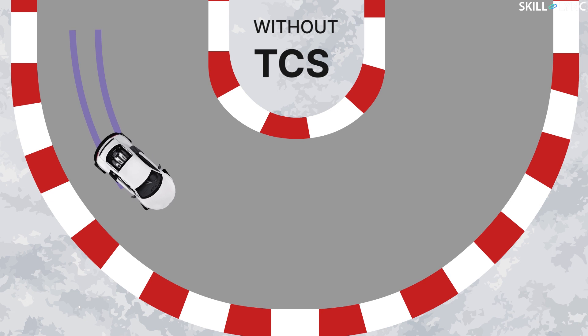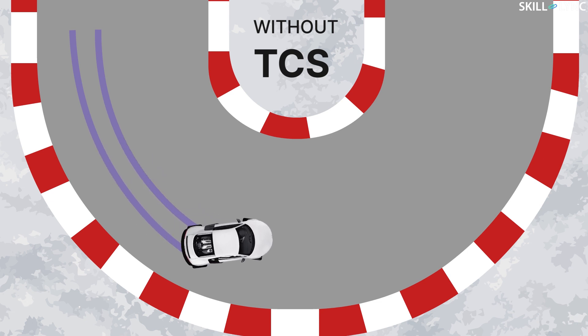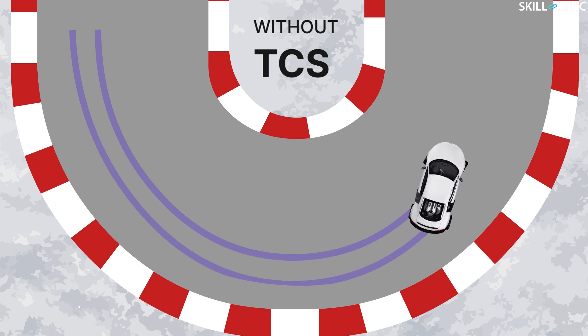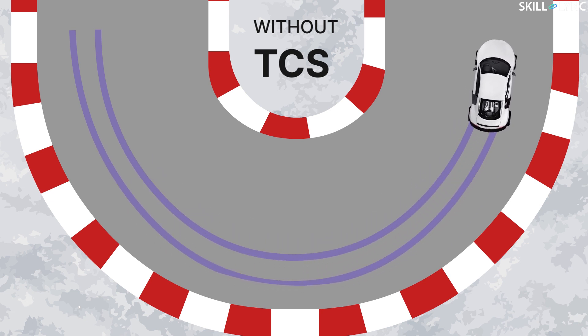The traction control system also helps in better cornering of the vehicle. When the driver applies more throttle while cornering, the wheels may slide. TCS prevents this by limiting the power to the wheels. The traction control system gets activated when the acceleration of the wheels mismatches with the acceleration of the vehicle, which happens mostly during slippery conditions.